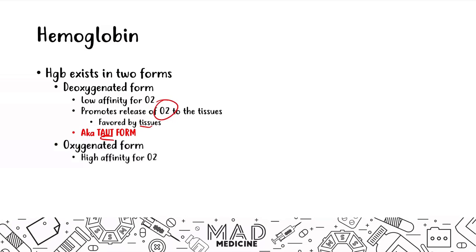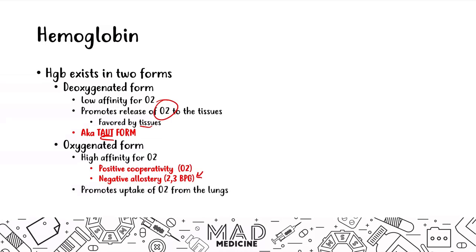Then you have the oxygenated form. This has a high affinity for O2 because of positive cooperativity — meaning it binds stronger to oxygen, and for every heme molecule that binds to oxygen the affinity increases. You're also going to have negative allostery due to the 2,3-BPG molecule. This oxygenated form promotes the uptake of oxygen from the lungs and is therefore favored by the lungs. It's also known as the relaxed form.